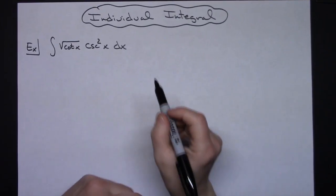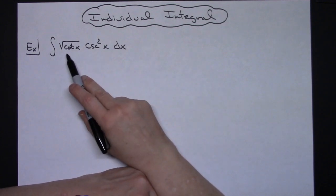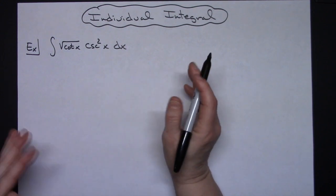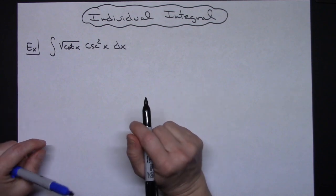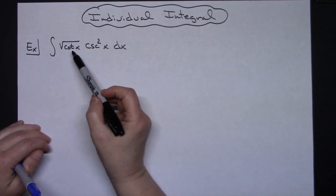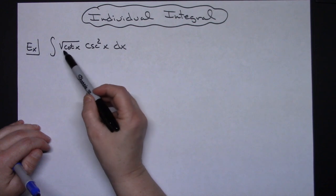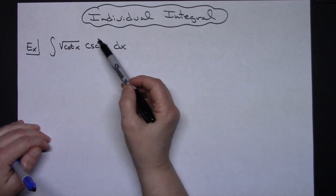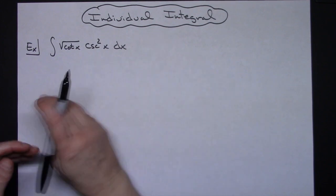In this video I'm going to be working on an individual integral. We're going to take a look at the integral of the square root of cotangent x times cosecant squared x dx. This is going to be a straightforward u substitution because if I let u be cotangent x, the derivative there would be negative cosecant squared x, so things are going to fall out really nicely.